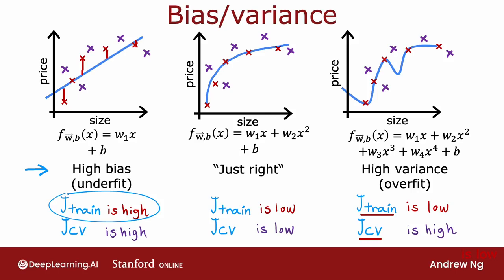To summarize: when D equals 1 for a linear polynomial, J_train was high and J_CV was high. When D equals 4, J_train was low but J_CV was high. And when D equals 2, both were pretty low.